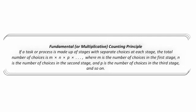The fundamental counting principle states that if a task or process is made up of stages with separate choices at each stage, the total number of choices is M times N times P, where M is the number of choices in the first stage, N is the number of choices in the second stage, P is the number of choices in the third stage, and so on.